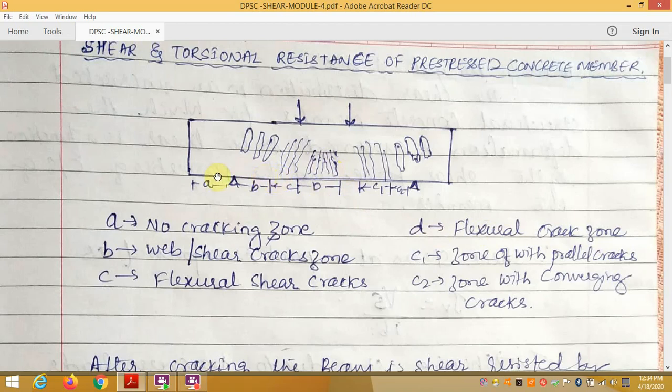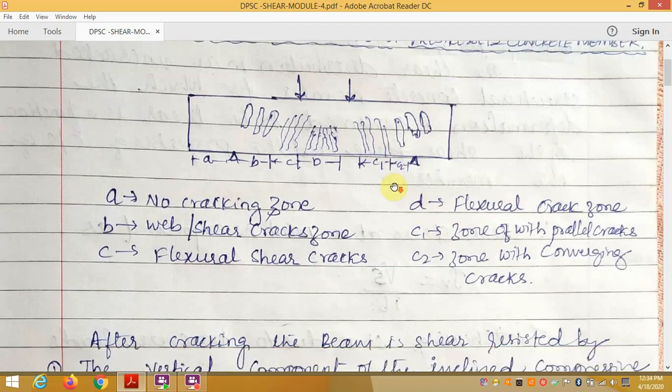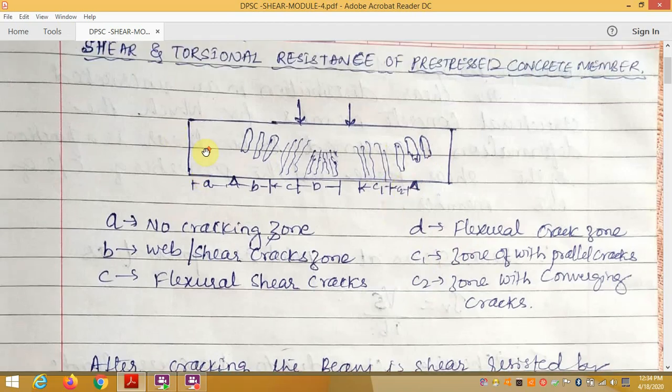Flexural cracks will be developed first, and due to these flexural cracks, C, B, and A will be developed. C1 is the zone with parallel cracks. Both sides are equal. C2 is the zone with converging cracks. This is the behavior of the torsional resistance and the pre-stressed concrete beam when subject to loading.